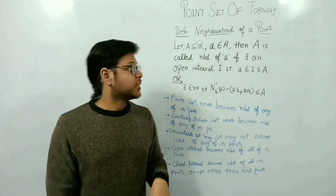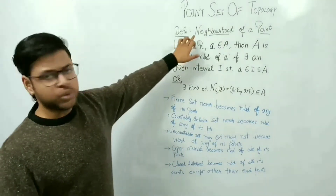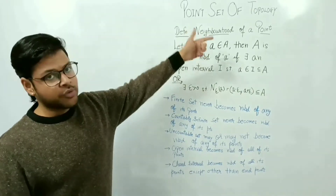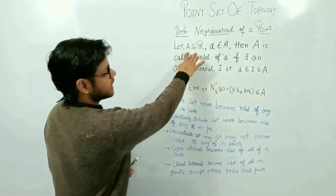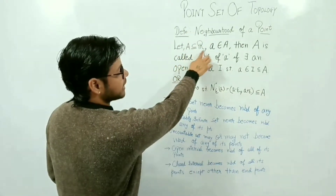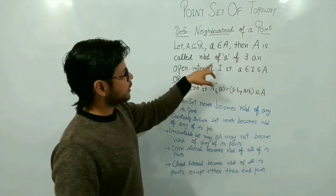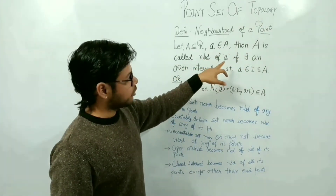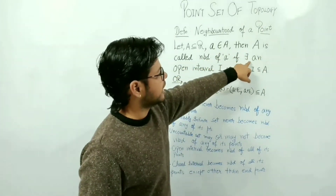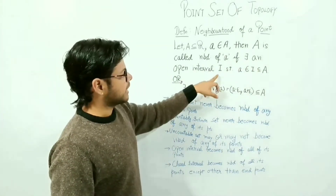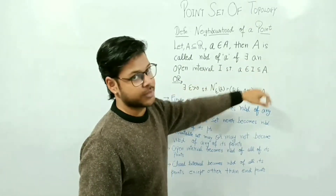We will start with neighborhood of a point. What is a neighborhood of a point? Let us say A is a subset of R, and 'a' belongs to A. Then A is called a neighborhood of point 'a' if there exists an open interval such that 'a' belongs to it and it is a subset of A.